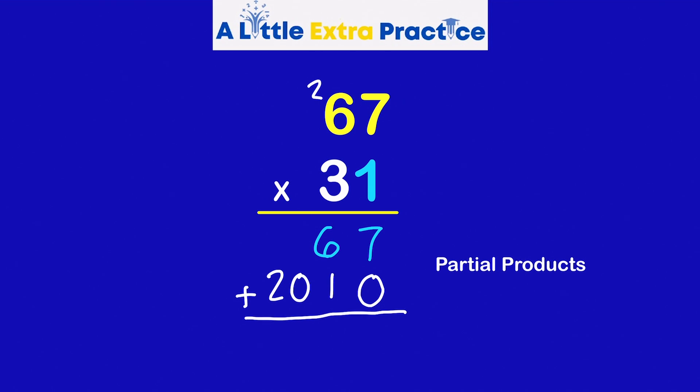The two partial products added together equal 2077. And of course, the answer is called the product.